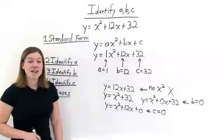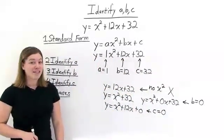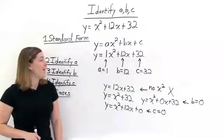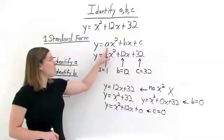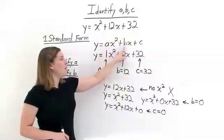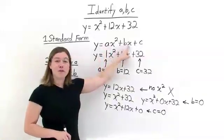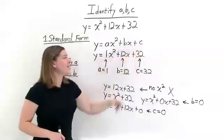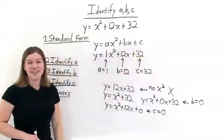So now we know how to identify a, b, and c in a quadratic equation. a is the coefficient in front of x squared, b is the coefficient in front of x, and c is the constant.